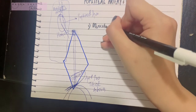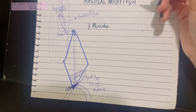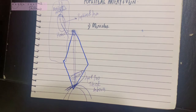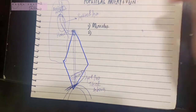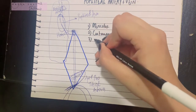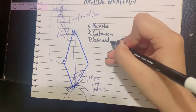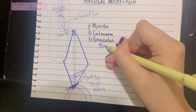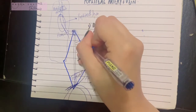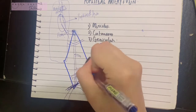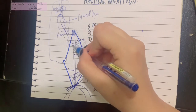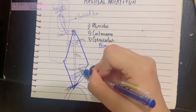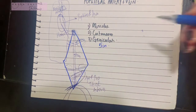The popliteal artery gives off many branches, categorized as: first, muscular branches — we discussed these in the anastomosis of the back of the thigh, where the upper muscular branches anastomose with the fourth perforating artery and supply the muscles of the back of the thigh. Second, some cutaneous branches. Third, and most importantly, the genicular branches, which are five in number: two superiors, one middle, and two inferiors.